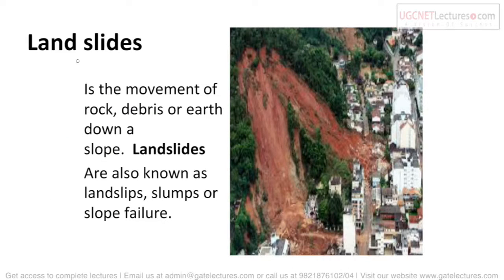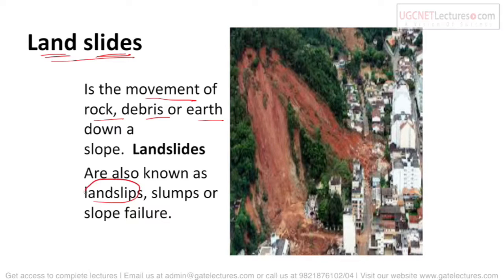The next natural disaster is landslides. Landslide is the movement of rock, debris, or earth down a slope. Landslides are also called landslips — where the land slips. Slumps refer to slope failure, where slopes fail. These are all collectively what we call landslides.